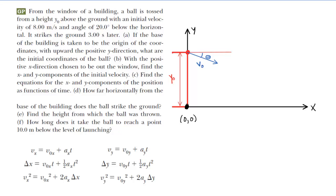In part A of this question, we are told that the base of the building is taken to be the origin of the coordinates. So down here, the lower right corner of the red-colored building is going to be the origin of our coordinate system, and we've labeled that (0, 0). Upwards is the positive y direction. Part A wants the initial coordinates of the ball, and we were told the building has a height y₀. Starting at the origin, if we measure straight up a distance of y₀ without changing our x-coordinate, then this point right here, where the ball is being tossed, would have the coordinates of (0, y₀).